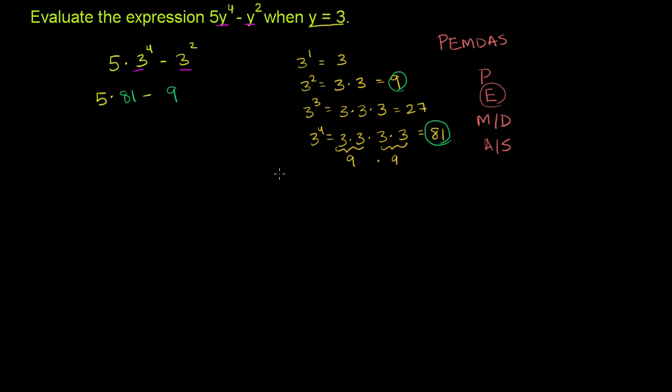Let's figure out what 5 times 81 is. So 81 times 5. 1 times 5 is 5, 8 times 5 is 40. So this right over here is 405. So it becomes 405 minus 9.